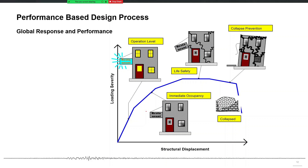The general guideline is that you use a 1.3 factor for concrete and a 1.17 factor for steel to convert nominal material properties to expected values. The purpose of non-linear analysis is to assess the actual performance of the building. Therefore, we use the non-linear static procedure or non-linear time history analysis for performance assessment, and generally they are not used for initial design.